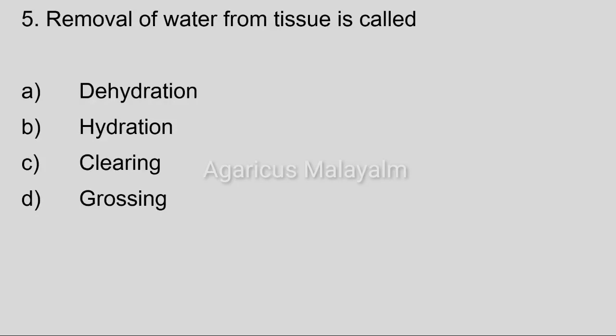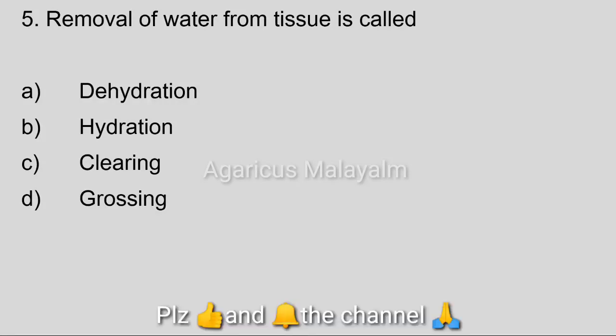Fifth question: Removal of water from tissue is called — Option A: dehydration, Option B: hydration, Option C: clearing, Option D: grossing. Correct answer: Option A, dehydration.